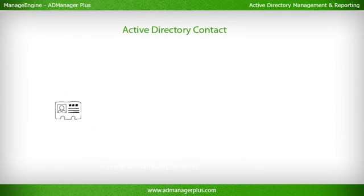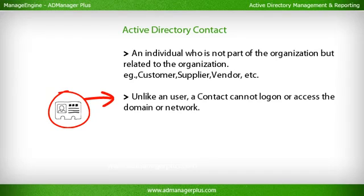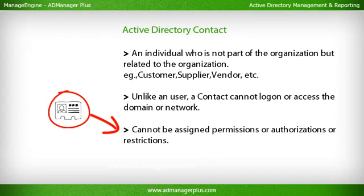An Active Directory Contact is an individual who is not part of the organization but is related to it — for example, a customer, supplier, vendor, etc. Unlike a user, a contact cannot log on or access the domain or network, and cannot be assigned permissions, authorizations, or restrictions.